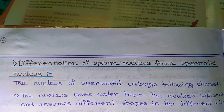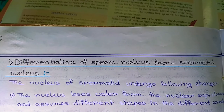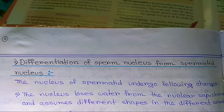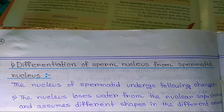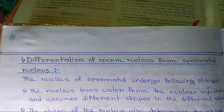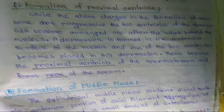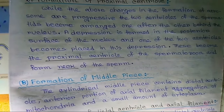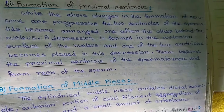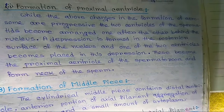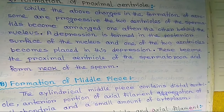Formation of the proximal centriole: while the changes in the formation of the acrosome are progressive, the two centrioles of the spermatid become arranged one after the other behind the nucleus. A depression is formed in the posterior surface of the nucleus and one of the two centrioles becomes placed in this depression. This becomes the proximal centriole of the spermatozoon and forms the neck of the sperm.